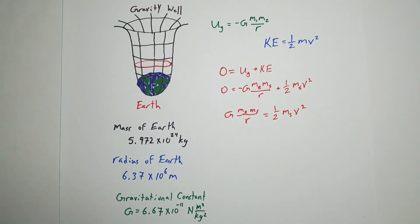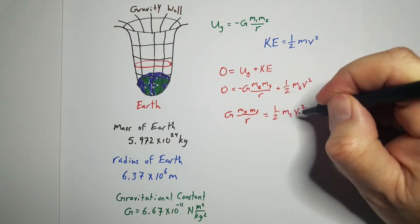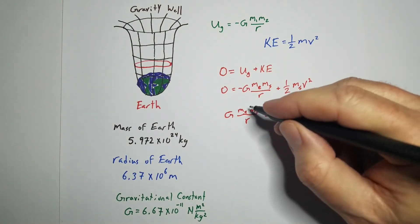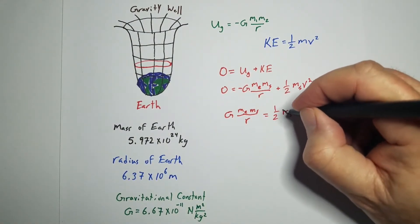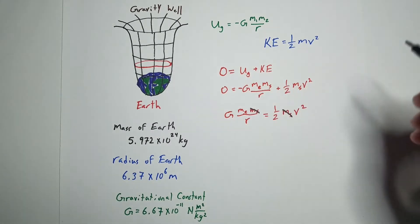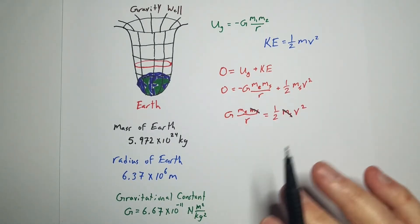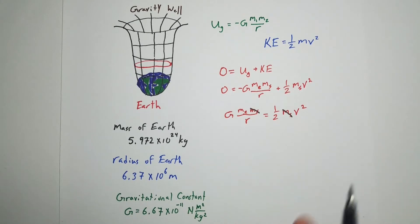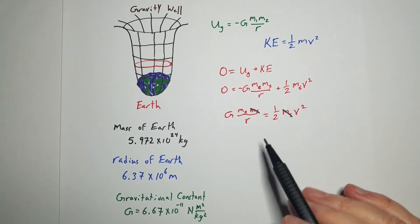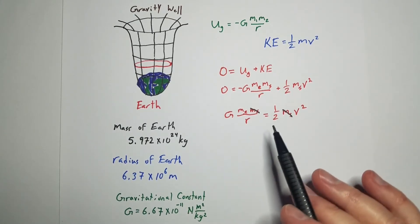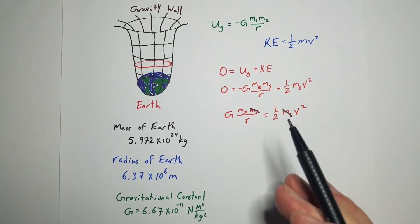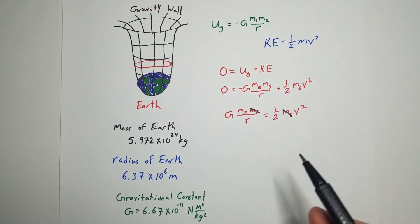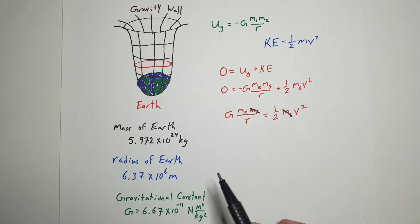Now one thing we can do right here: the mass of the ship appears on both sides of the equal sign, so they cancel out. The mass of the object actually doesn't make any difference whatsoever about escaping Earth's gravity well — it cancels out. So it doesn't matter how big the ship is; it needs to achieve this minimum velocity in order to escape.